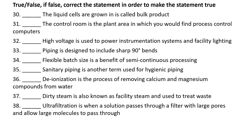Now for the modified true-false section. Statement: the liquid cells are grown in is called bulk product. That is false — correct it by changing 'bulk product' to 'growth medium,' so it reads: the liquid that cells are grown in is called growth medium. Statement 31: the control room is the plant area in which you would find process control computers. That is true. Statement: high voltage is used to power instrumentation systems and facility lighting. That is false — change 'high' to 'low.'